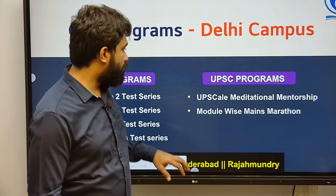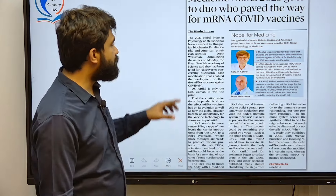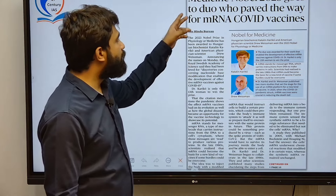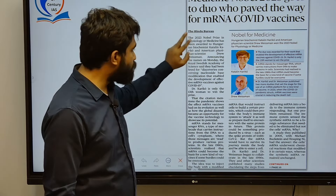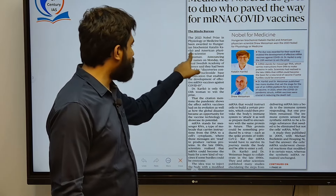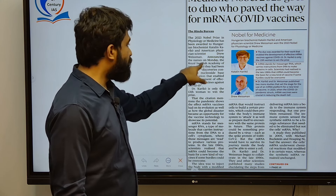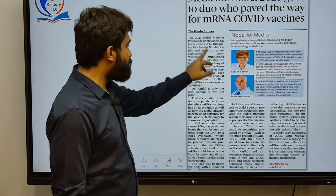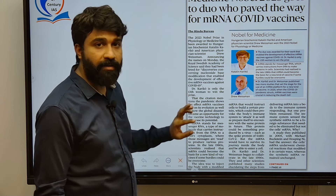Coming to the first question. The first question is talking about Medicine Nobel 2023, which goes to two scientists: Katalin Karikó, a biochemist from Hungary, and Drew Weissman from America.